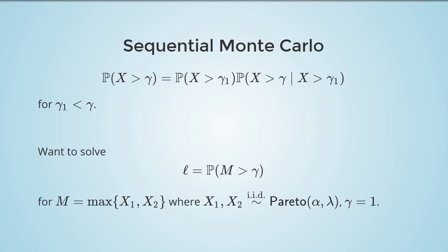I'll illustrate the main ideas with the example below. Here we want the probability that M is above the level gamma, where X1 and X2 are IID Pareto random variables.